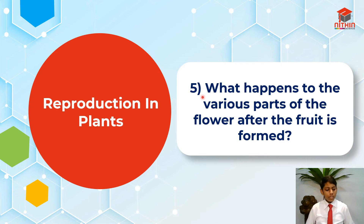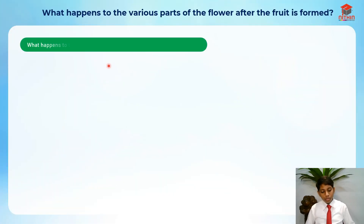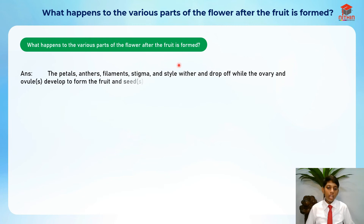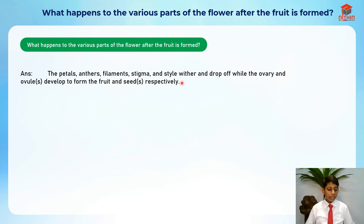For segment five, let's go through what happens to the various parts of the flower after the fruit is formed. The petals, anthers, filaments, stigma, and style — basically all the parts of the flower except for the fruit and seeds (the ovules and ovary) — will wither and drop off because they are no longer useful.